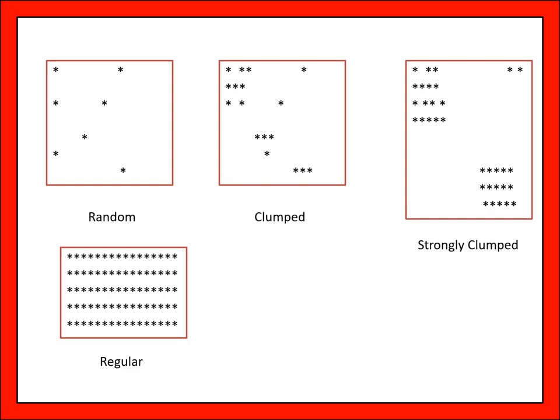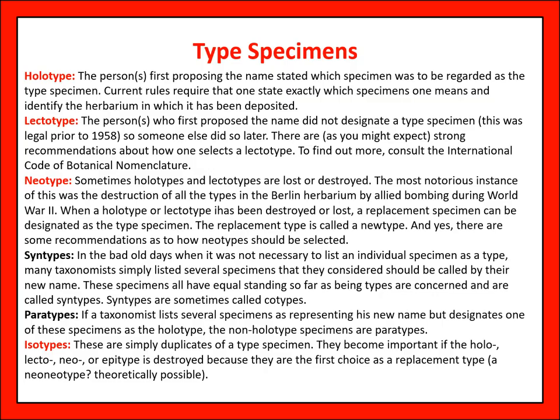From regular abundance we can collect type specimens like holotype, lectotype, neotype, xenotype, paratype, and osteotype. We should know about the type specimens.